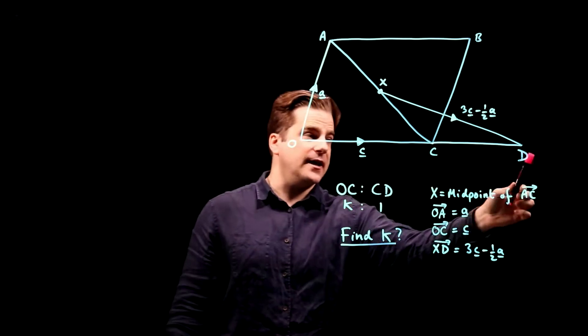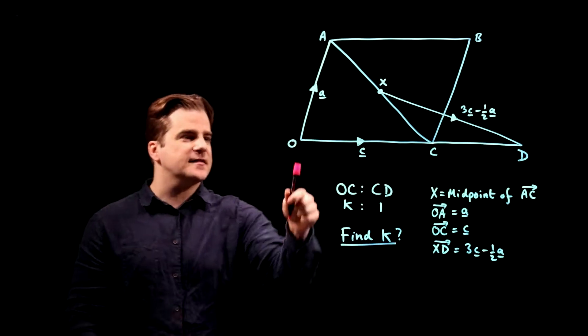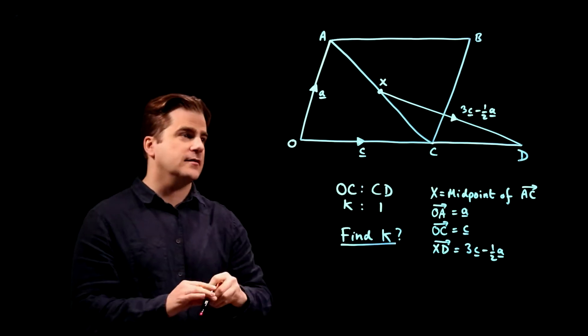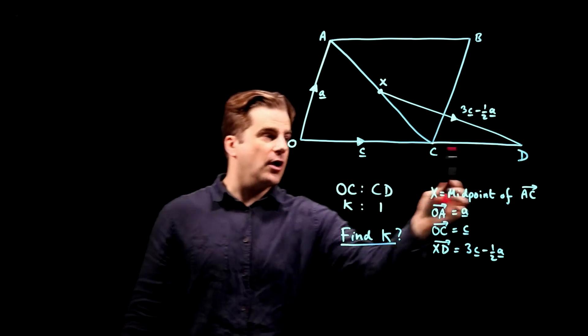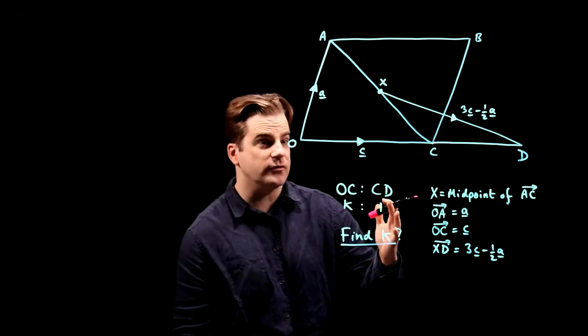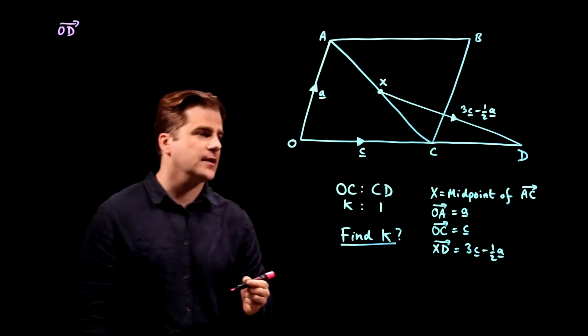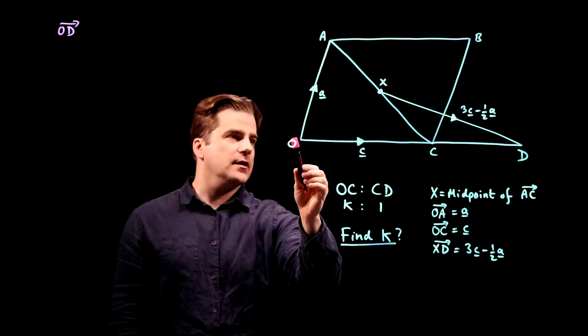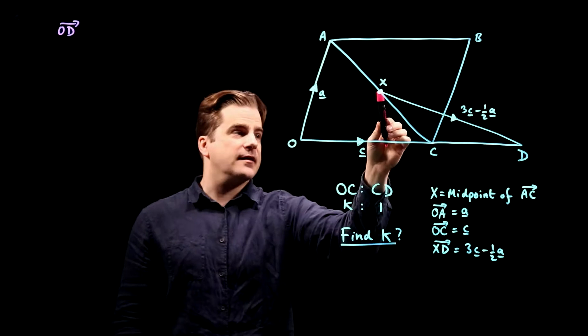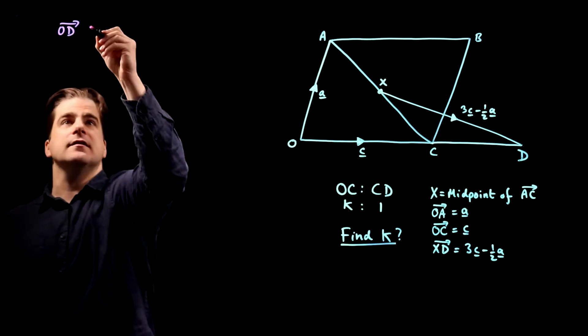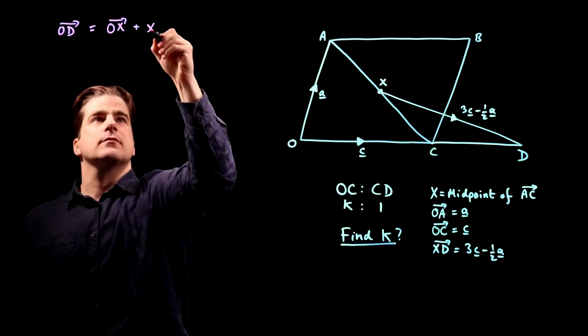So let's just do something. Now it's talking about this line here, O to C and C to D. So I sense it's something to do with this line. I don't know what yet. So what I'm going to do is work out the vector for O to D. I don't know if that's going to help, but like I say, you've got to do something. So let's work out O to D. Well, we know X to D. We've been told that. So if we can go from O to X, we can get O to D. So O to D is equal to O to X and then X to D.